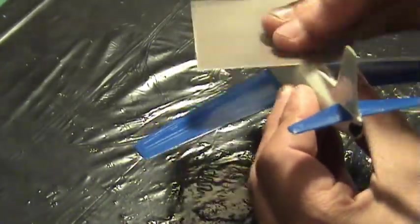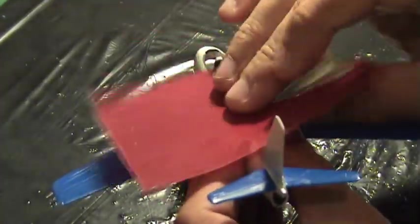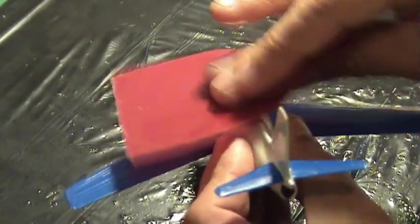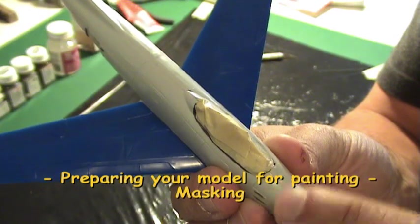When sanding, be careful not to erase the panel lines and the molded detail on the model. Use masking tape to cover the areas of the model you don't want painted.